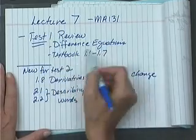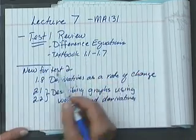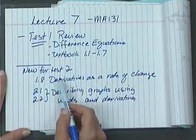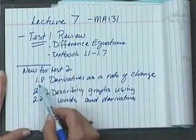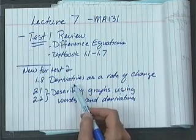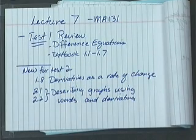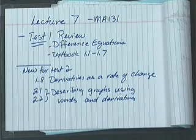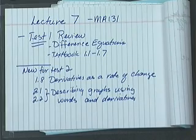After we finish our little review today, we're going to try to get back on track and start new material. Actually, 1.8 — I've already tried to put a little bit in your minds, and the book did too, when we talked about cost versus marginal cost. What do you remember marginal cost was? It's the derivative, which is the slope, and that tells you the extra cost to produce one more item.